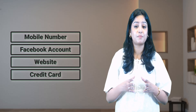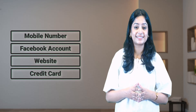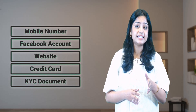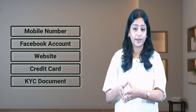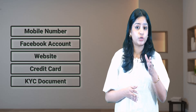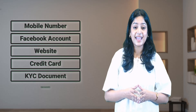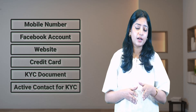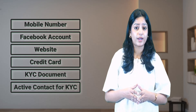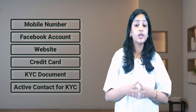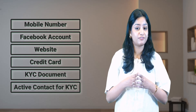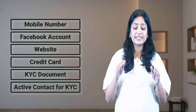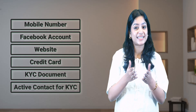Next is a credit card, which is required to add to your Facebook account. Meta will use it to deduct message charges periodically. Next is a KYC document — to create a business ID, a legal business name is required, so you must have a GST number and PAN card. Finally, the mobile number or email ID linked to the KYC document should be active, as you will receive an OTP on it for verification. Once you have all these things, you can proceed with the setup process.